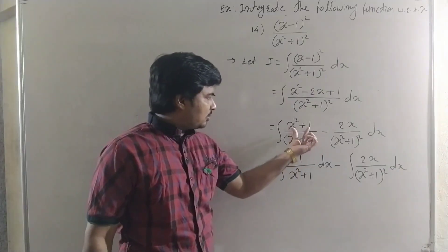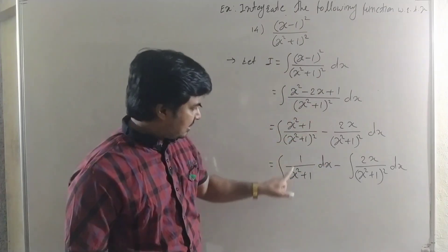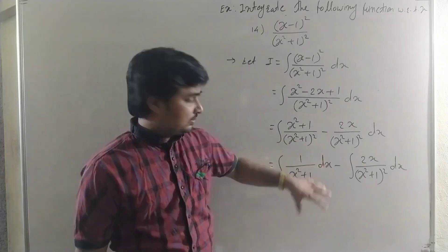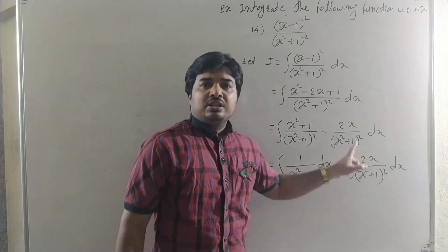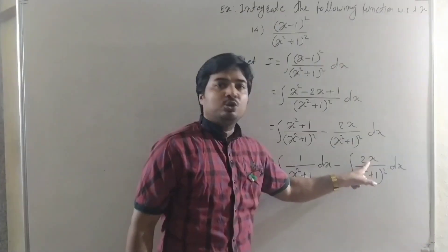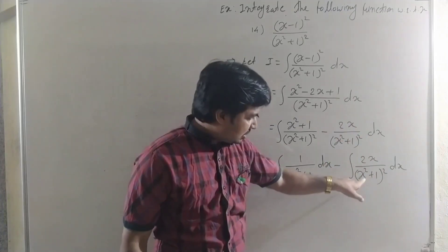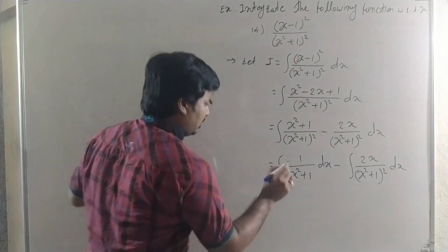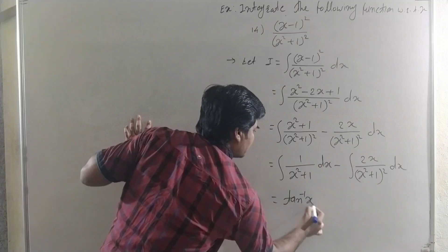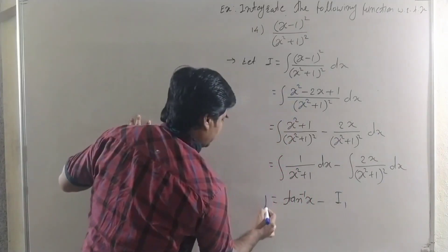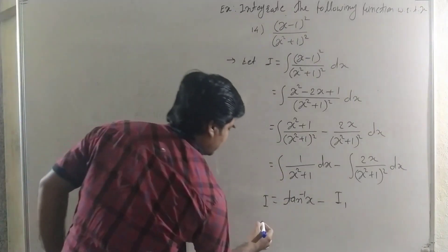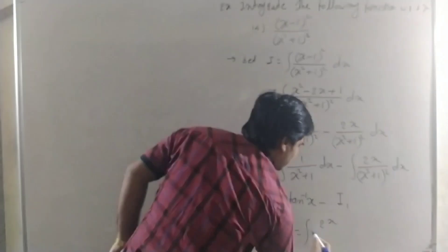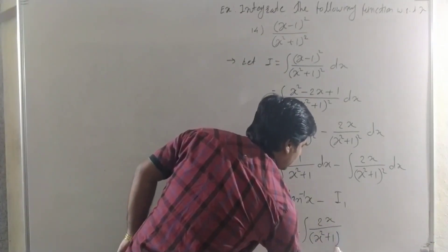We separate the integral: ∫ 1/(x²+1) dx − ∫ 2x/(x²+1)² dx. The (x²+1) terms cancel in the first part. The first integral is the standard form: ∫ 1/(1+x²) dx = tan⁻¹x. The second integral we solve by substitution. In the multiple of dx, there is 2x, and 2x is the derivative of x². So we put x²+1 = t, calling the second integral i1.